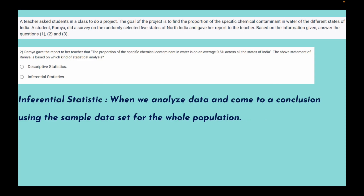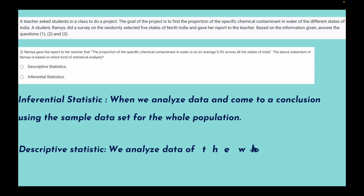For example, in election poll results, the whole population is not surveyed — only a few thousand people are asked about their party of choice, and on that basis the poll result is declared. Descriptive statistics, on the other hand, involves analyzing data of the whole population. For example, if a company reports sales across India, they must account for all locations they have served, not just a sample — that report is based on descriptive statistics.